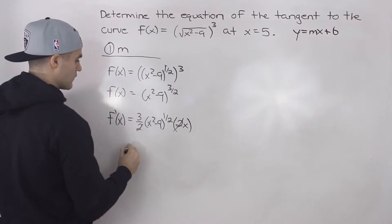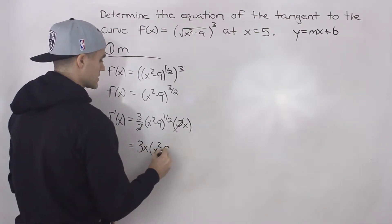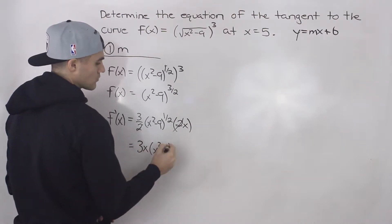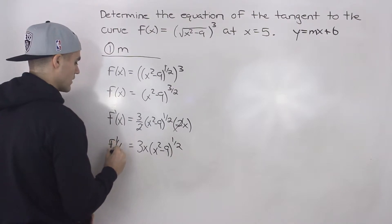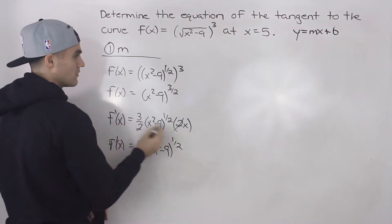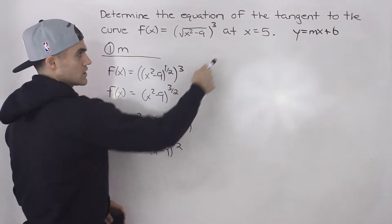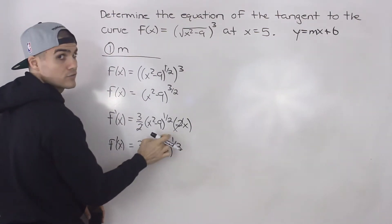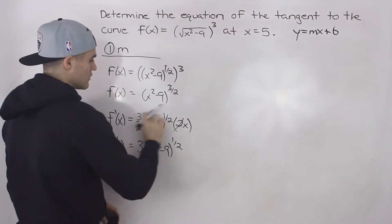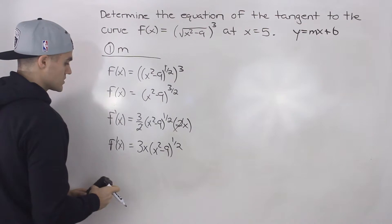We bring the x in front, giving us 3x times x squared minus 9 to the power of a half — or the square root of x squared minus 9. You actually don't even have to simplify the derivative because we're just going to plug in x equals 5. But this derivative isn't too complex, so I simplified it first.